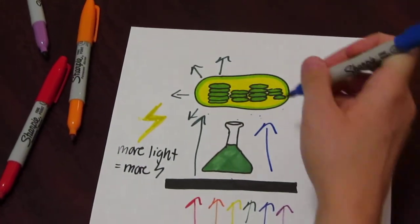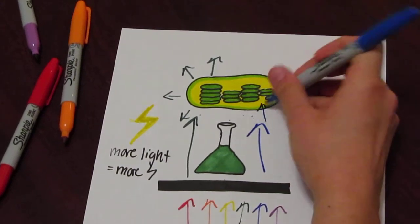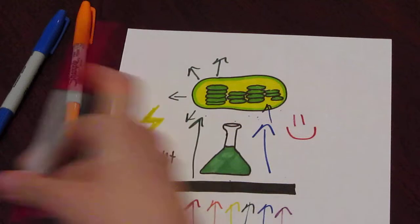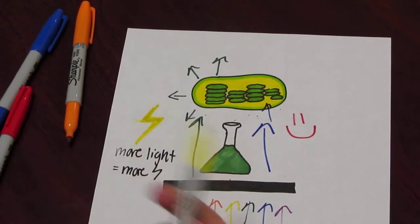The blue light's going to go through here and the chloroplast is going to absorb the blue light. So that's good, the chloroplast is happy it has blue light, but that means the light is not passing through to the device that's going to measure the electricity, so there's no electricity here.